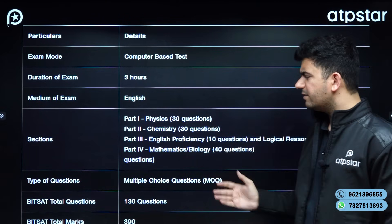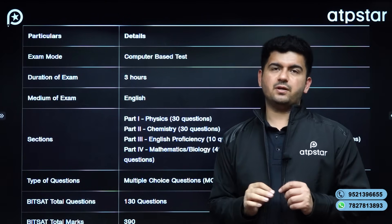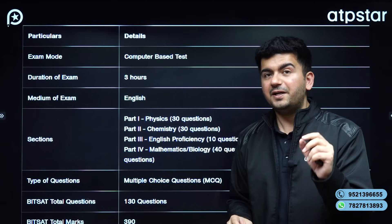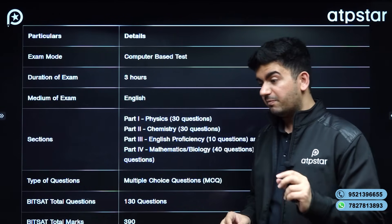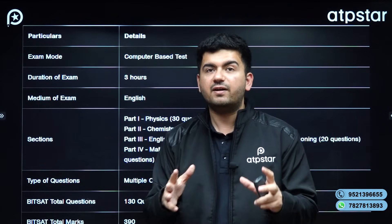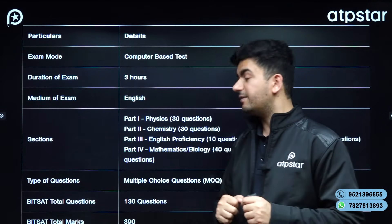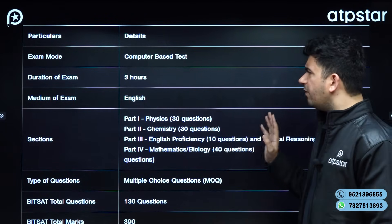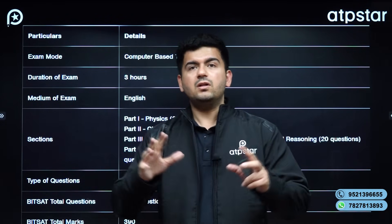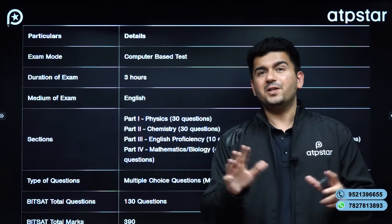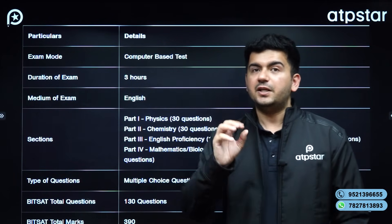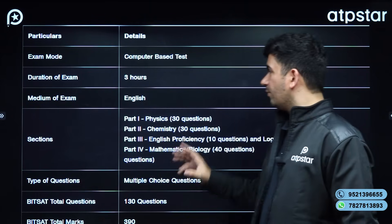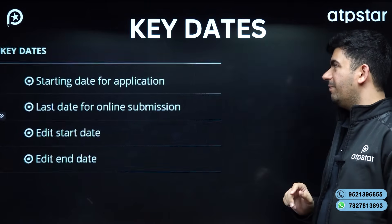Total questions, as you can see, is 130. Each question, if you do it right, you will get +3; if you do it wrong, it will be -1. Negative marking is very strict in this particular case, so the maximum score you can get is 390. Apart from this, if you are able to attempt all 130 questions in time, then you will be getting a few bonus questions as well. So that facility is also available.